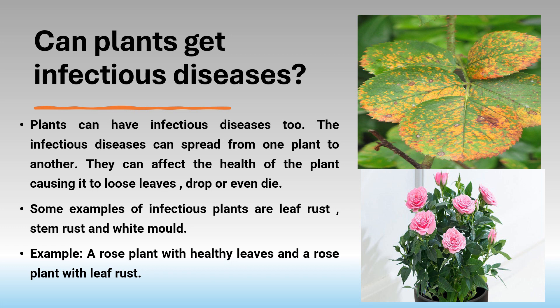Can plants get infectious diseases? Yes, plants can also have infectious diseases. The infectious diseases can spread from one plant to another. They can affect the health of the plant, causing it to lose leaves, drop, or even die. Some examples of infectious plant diseases are leaf rust, stem rust, and white mold. For example, a rose plant with healthy leaves compared to a rose plant with leaf rust.